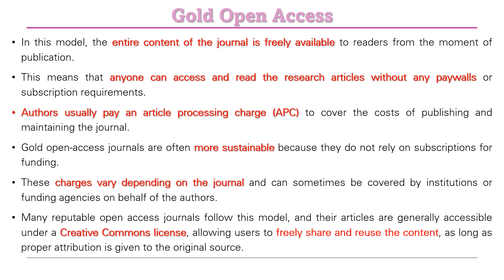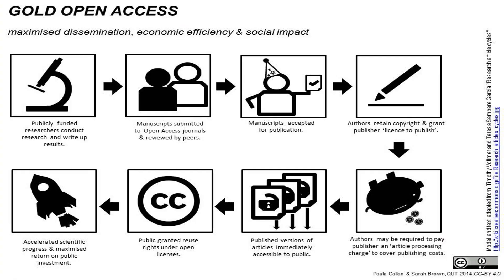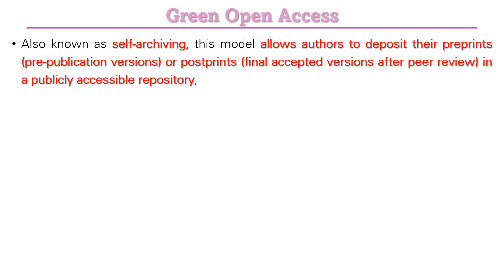Most gold open access journals use the Creative Commons CC BY license, making content freely shareable and reusable. The typical process is: the manuscript is submitted and peer reviewed; upon acceptance, the author retains copyright and grants the publisher a license to publish; the author may pay APC; and then the published version is immediately accessible to the public with reuse rights, accelerating scientific progress and increasing citations and accessibility.